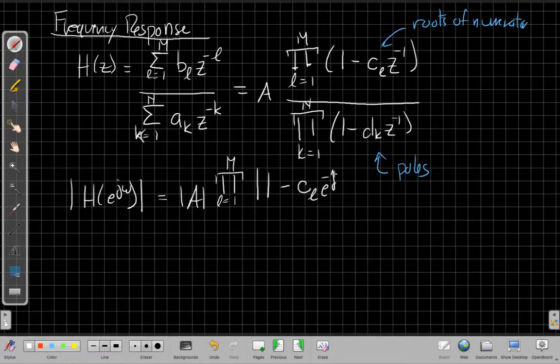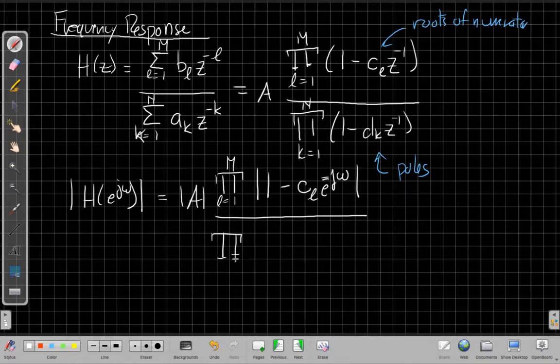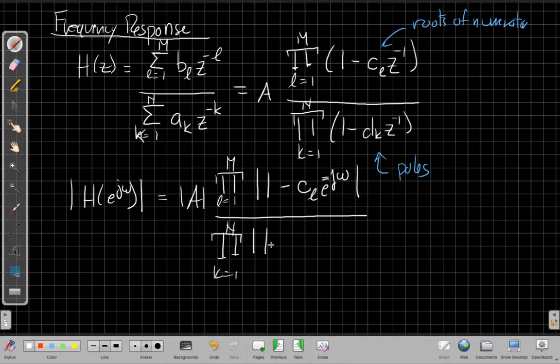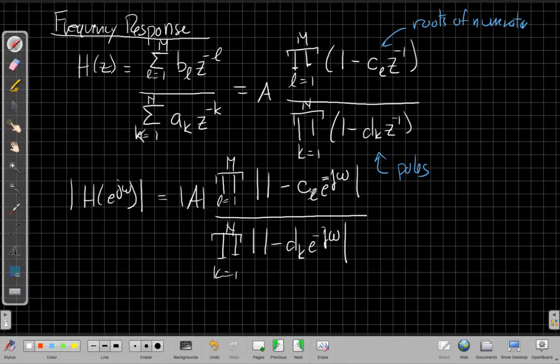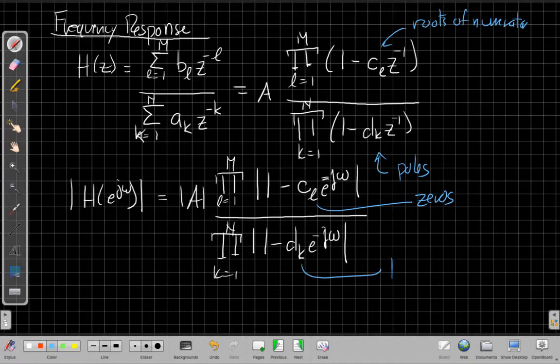So it says I'm getting a product of, to find the frequency response when I set z equal to e^{jω}, z^{-1} becomes e^{-jω}. It says my frequency response takes the form of this product in the numerator and the product in the denominator, similarly, of magnitude of 1 minus d_k e^{-jω}. So it says I have all these, the product of all these different magnitudes of complex numbers that change with ω. They change with ω, but they're dependent on these c_l's, which are the zeros. If I change the zeros or I change the poles, I'll change the Fourier transform magnitude.